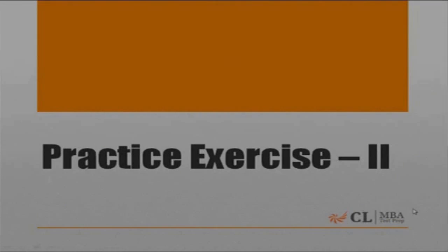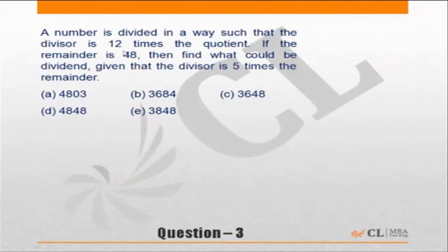Okay, let's do practice exercise 2, question 3. A number is divided in such a way that the divisor is 12 times the quotient. The remainder is 48. Then what could be the dividend, given that the divisor is 5 times the remainder?